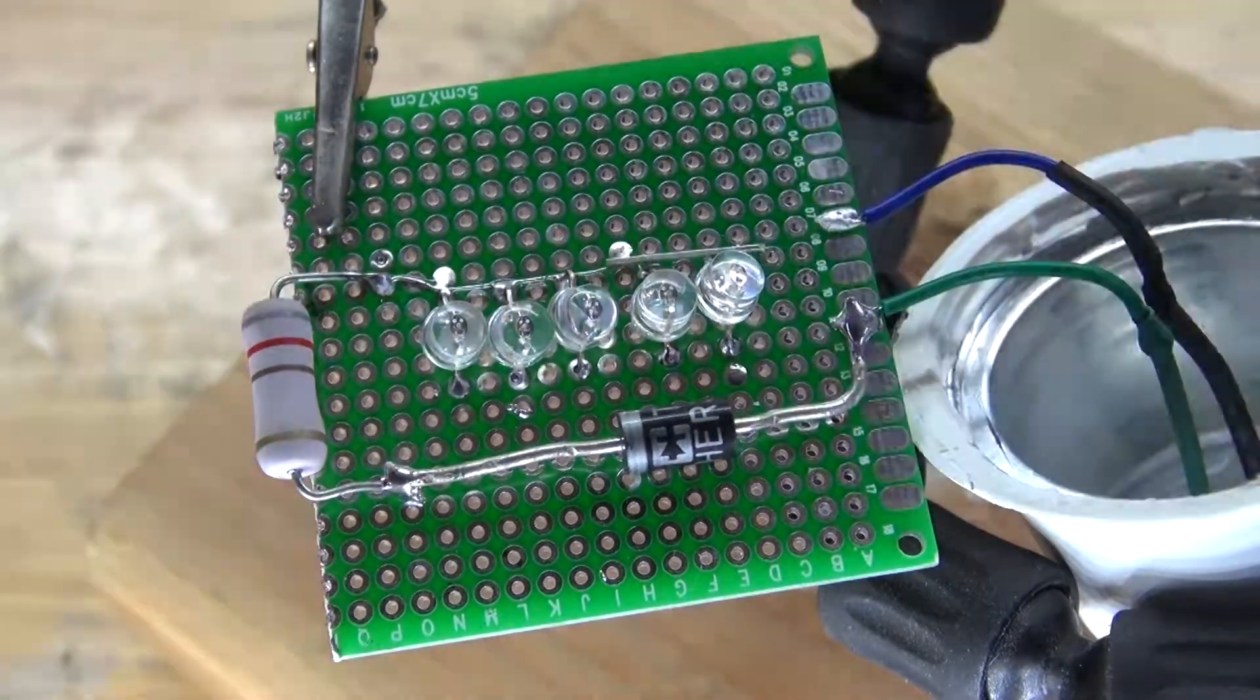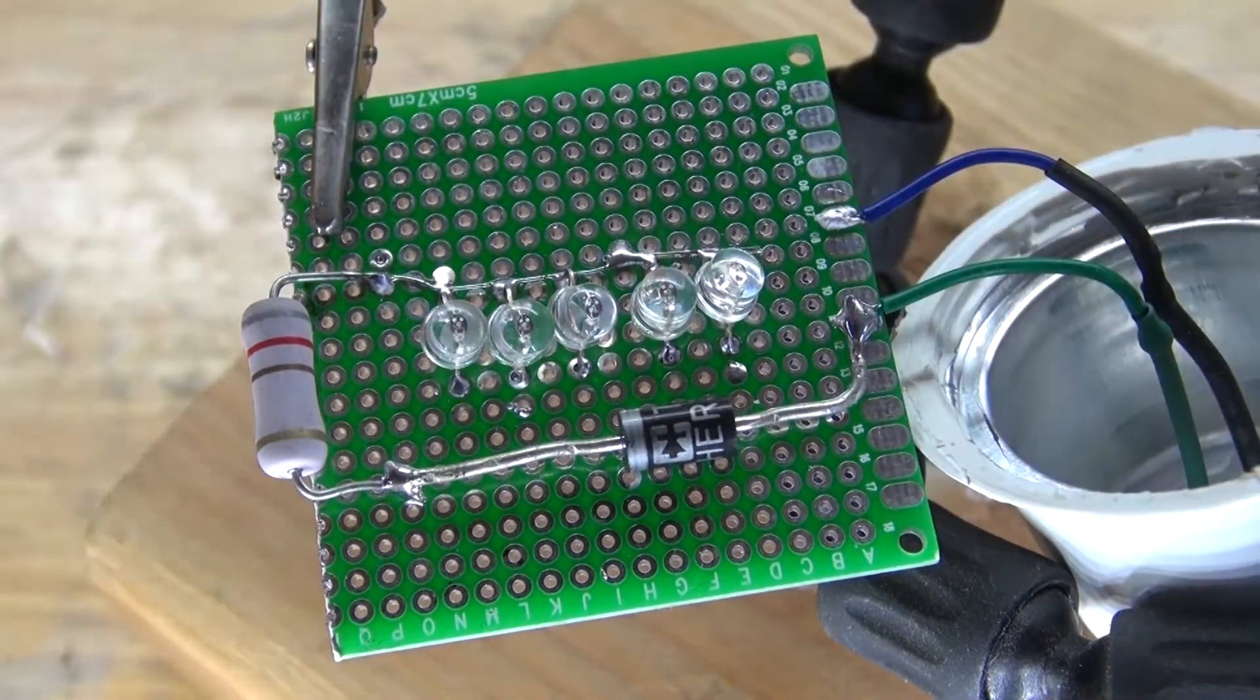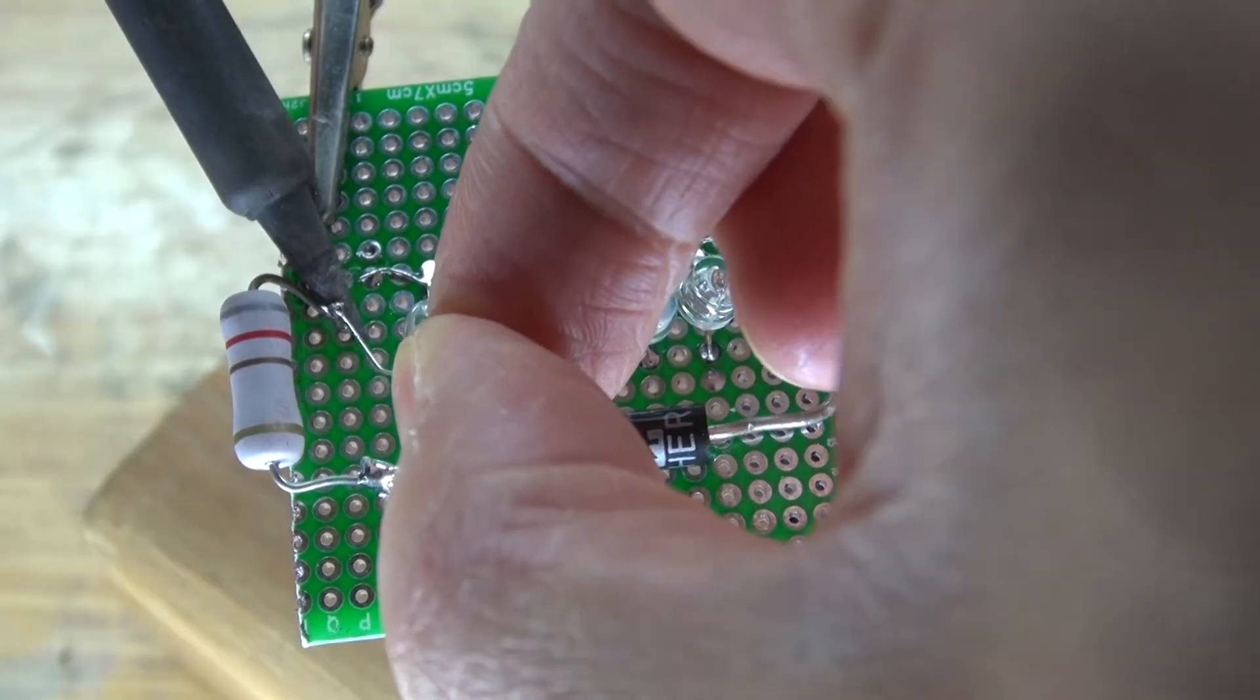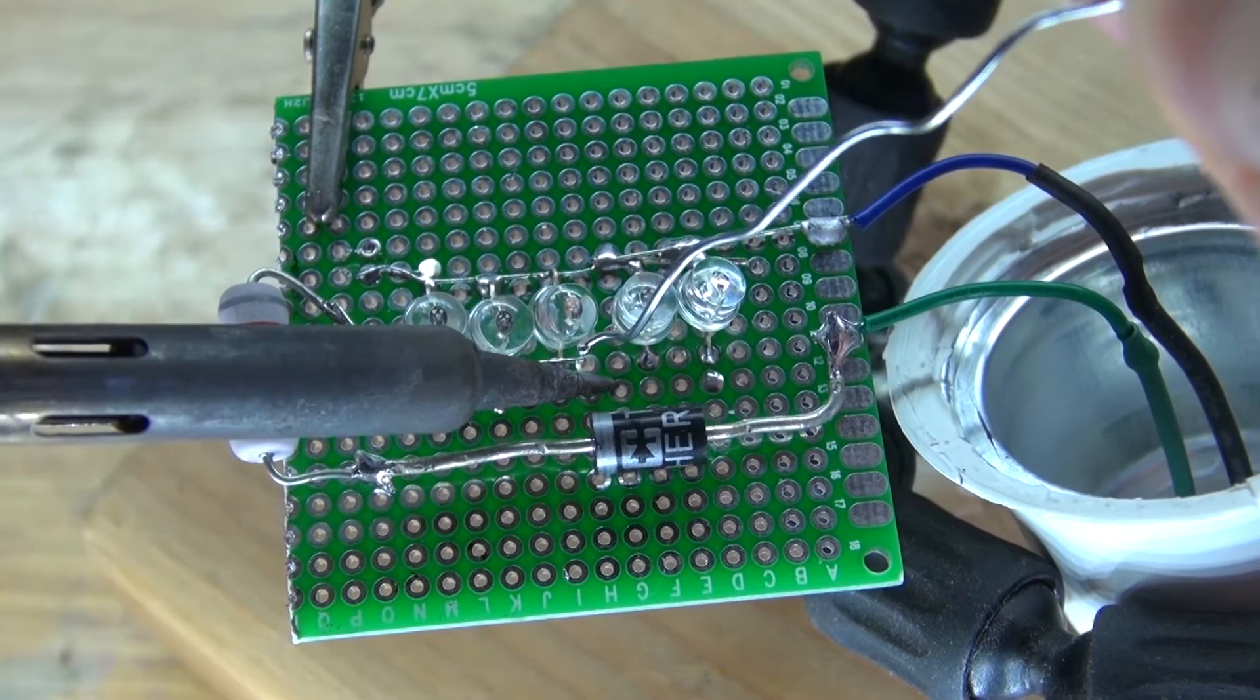Soldering it to the resistor like this makes it easier to solder those bridge wires together. Next, desolder the resistor, bend over the lead and solder a bridge wire to it. And now solder the resistor to all of the anodes of the LEDs.